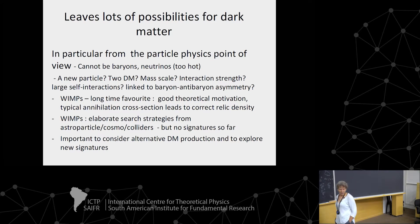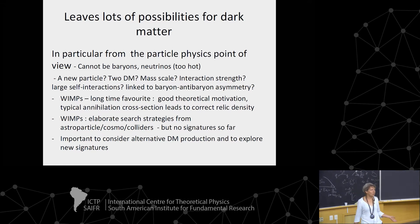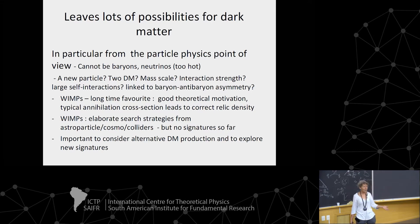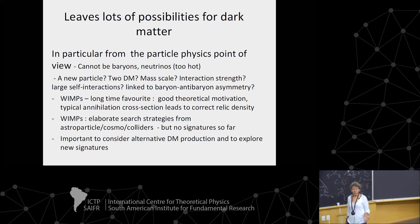That still leaves us with many possibilities for dark matter from the particle physics point of view. We know it cannot be baryonic, it cannot be neutrinos because they're too hot, but we still don't know: Is it one new particle or more than one? What is the relevant mass scale? What is the relevant interaction scale? Do we have large self-interaction? Is it linked to baryon-antibaryon asymmetry?